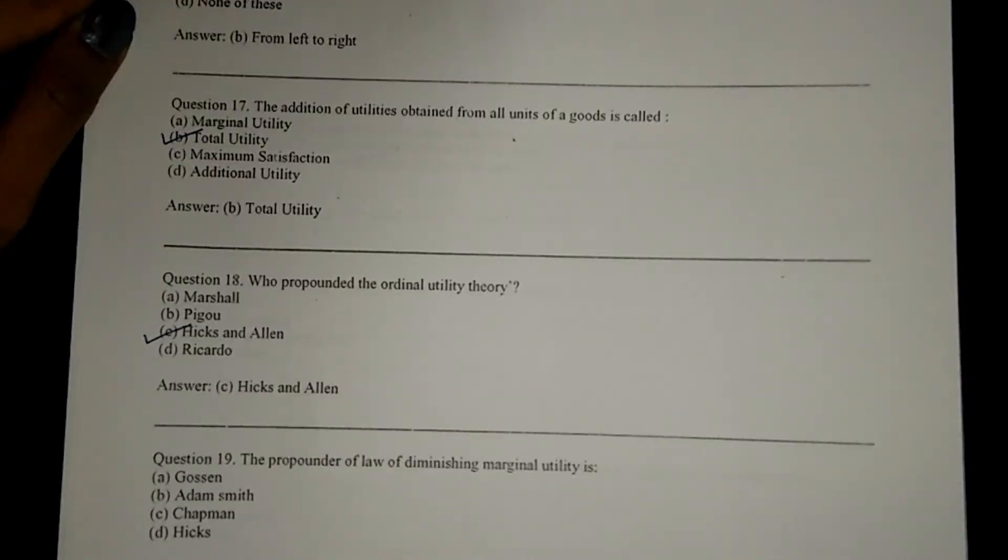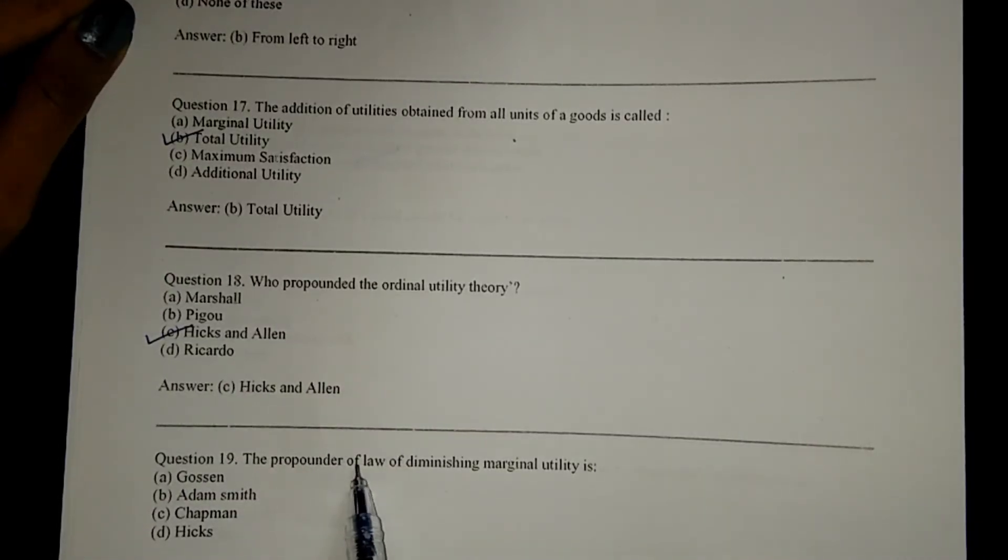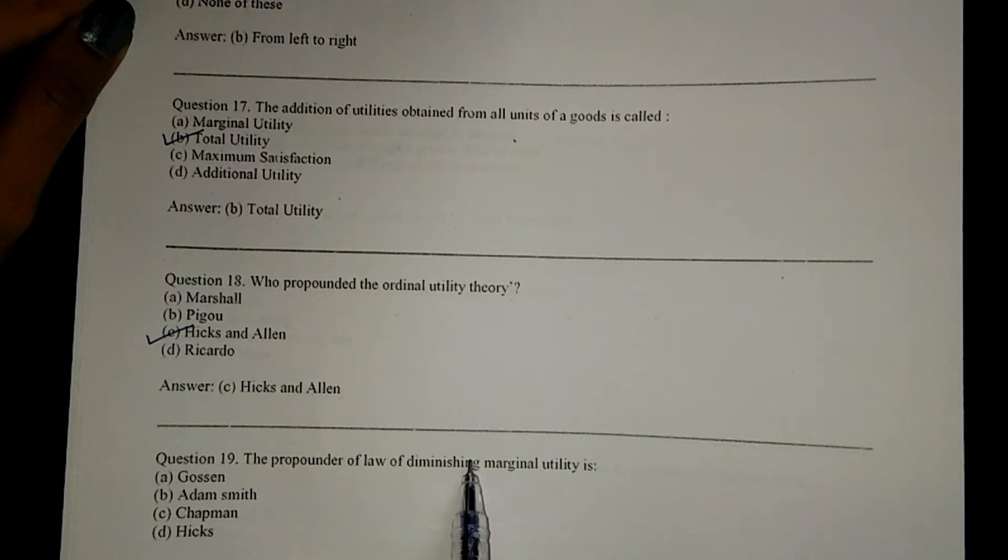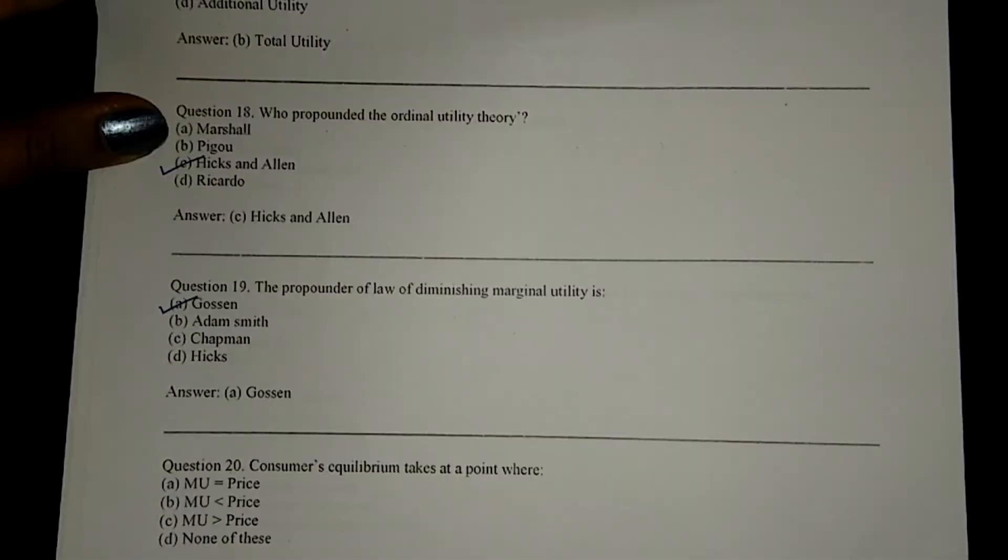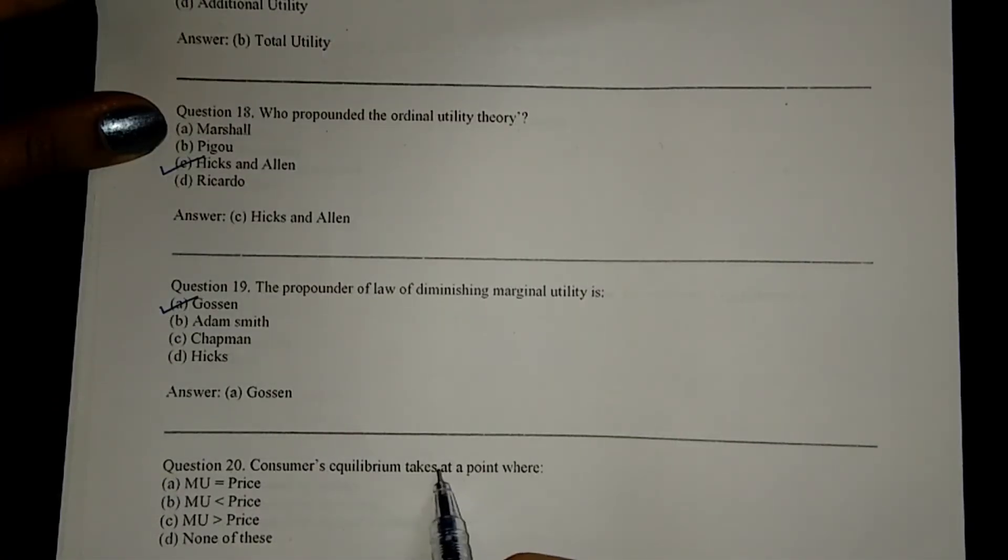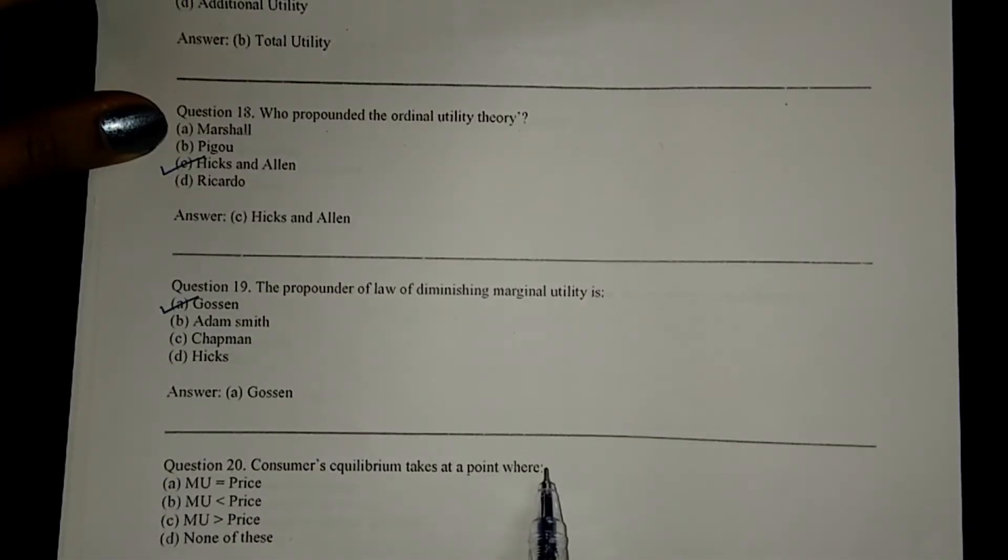Next, who promoted the ordinal utility theory? Hicks and Allen, option C. The propounder of law of diminishing marginal utility is A, Gossen.